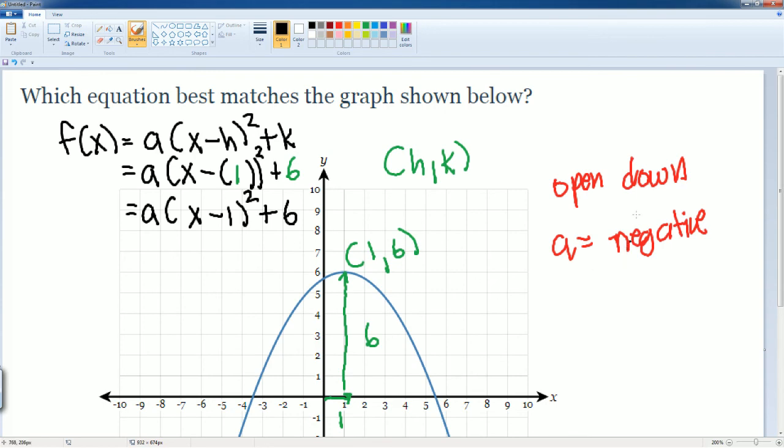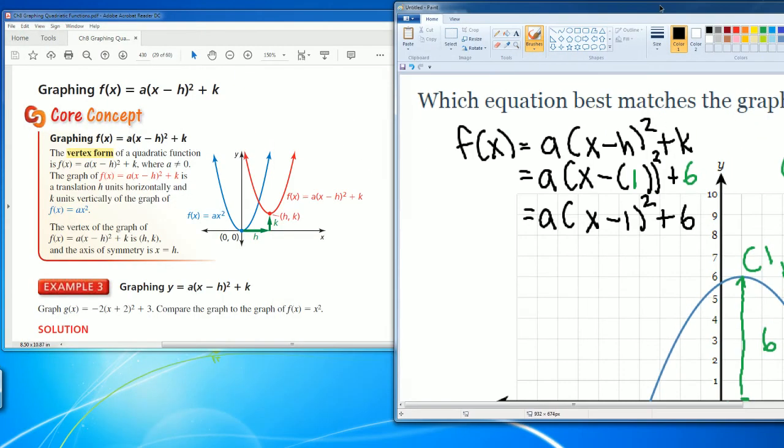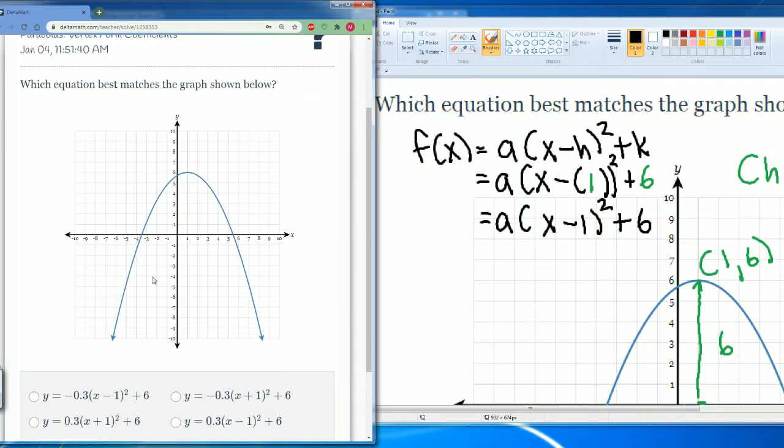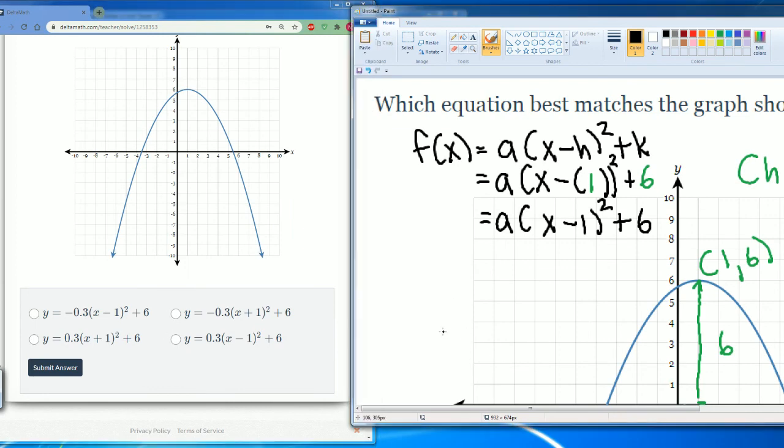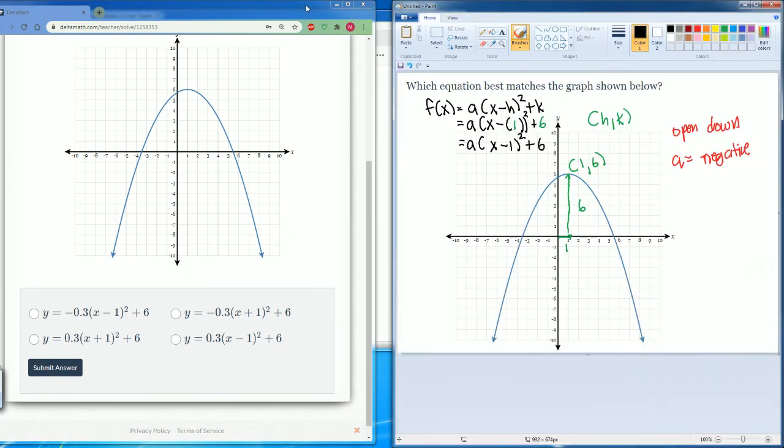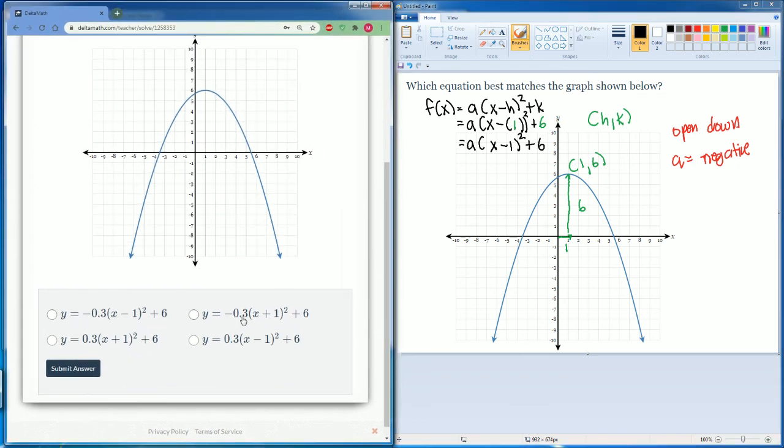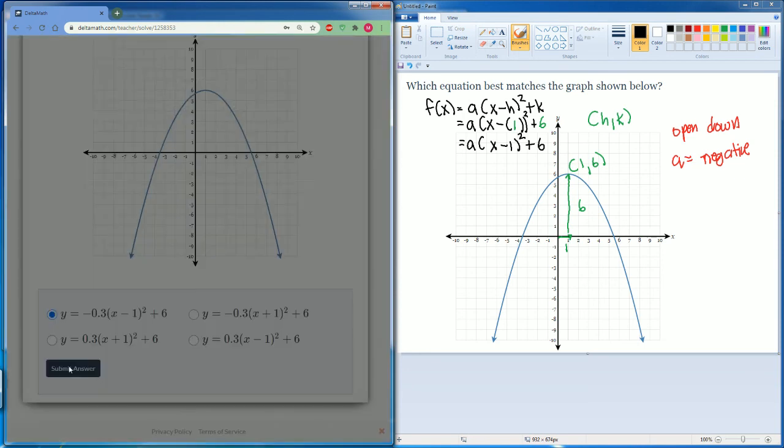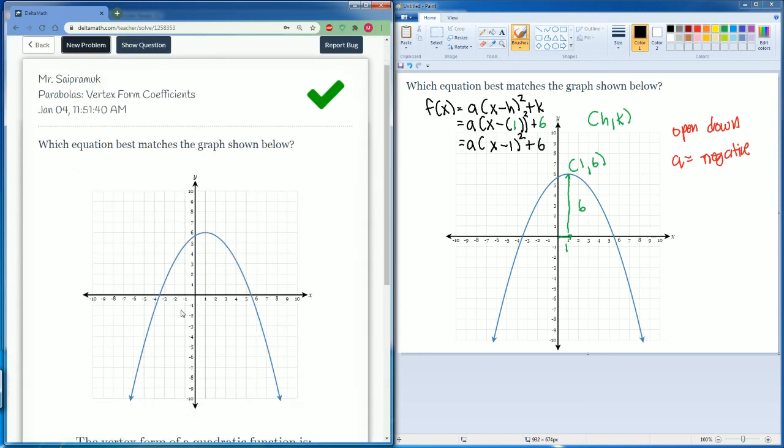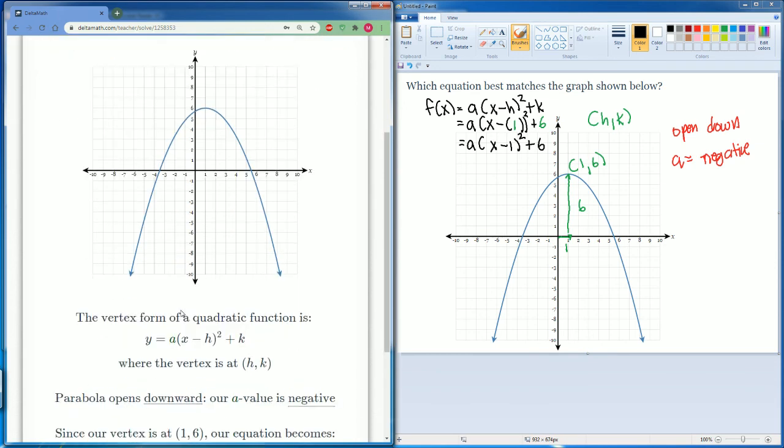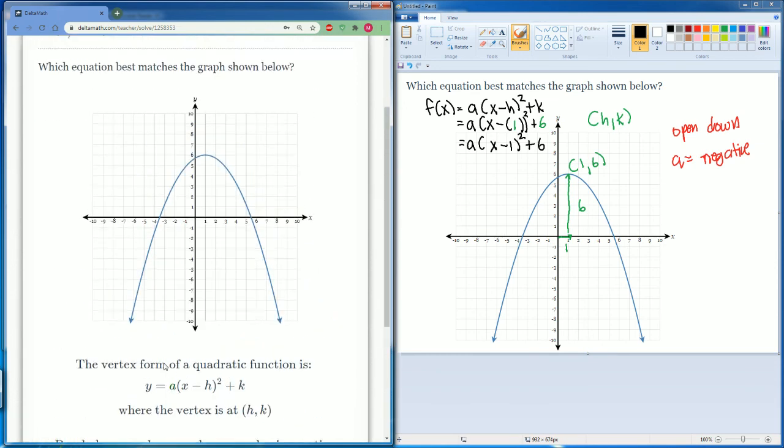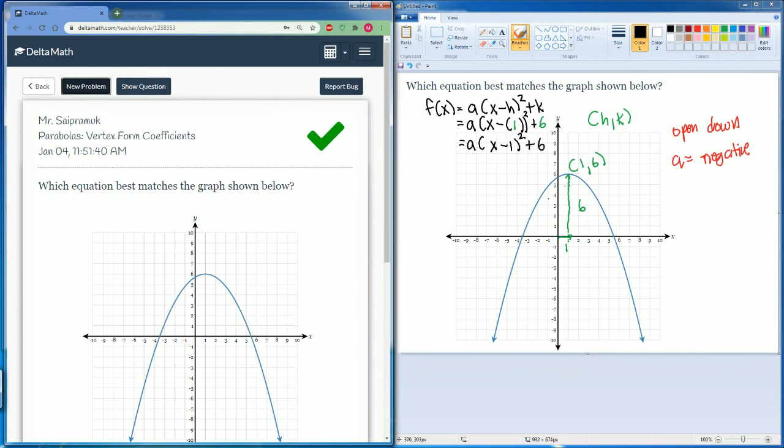And we know a was negative because it points down. So let's take a look at which one that would be. We saw that it is negative, so it points down. So it should be the first two. We should just look at the vertex. It's minus one squared plus six, so it would be a. Submit your answer. So there you go. That is how you match the correct vertex form with the parabola using the vertex as well as seeing how a opens up or opens down.